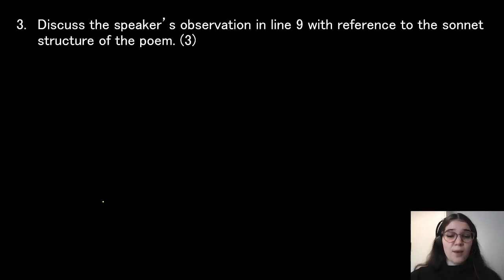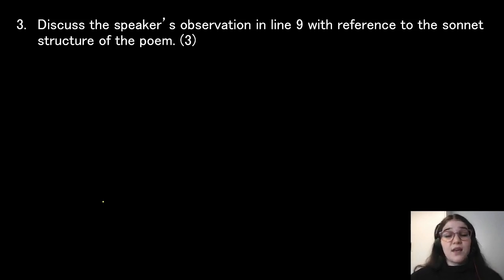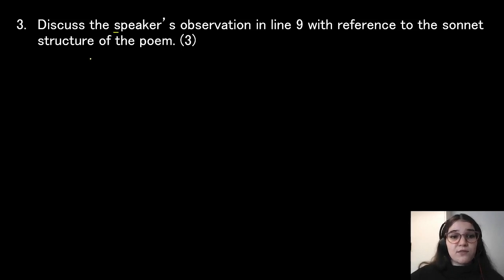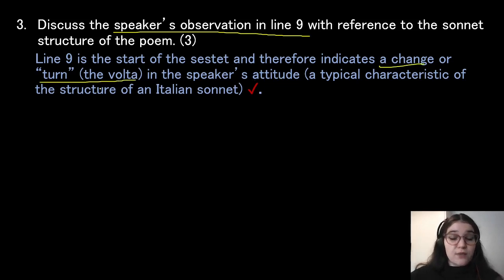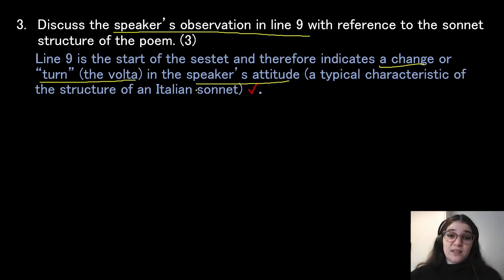Discuss the speaker's observation in line 9 with reference to the sonnet structure of the poem. We need to comment on the structure and mention what observation the speaker makes in line 9. Line 9 is the start of the sestet, and therefore indicates a change or turn — otherwise known as the volta — in the speaker's attitude. This is a typical characteristic of the Italian sonnet structure.